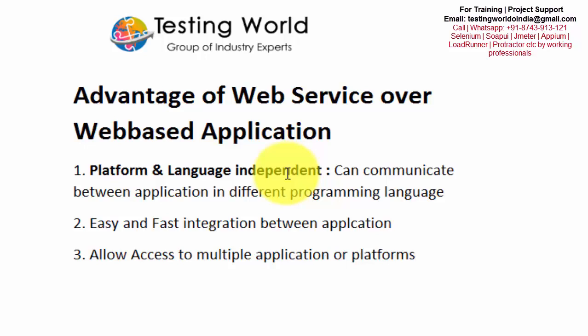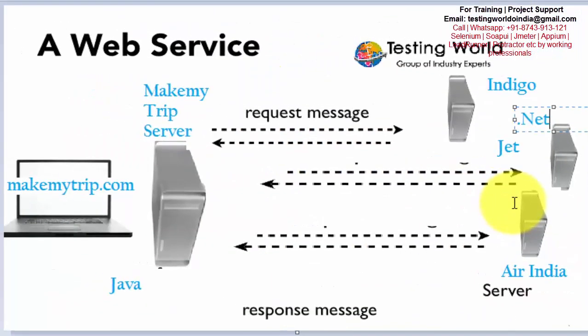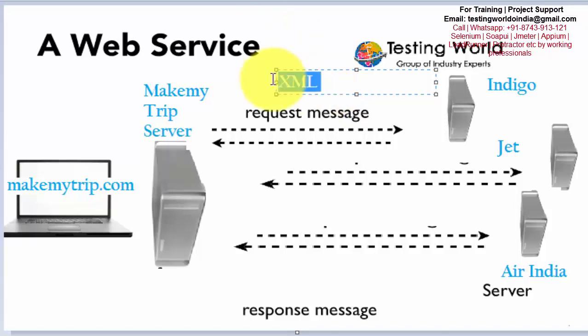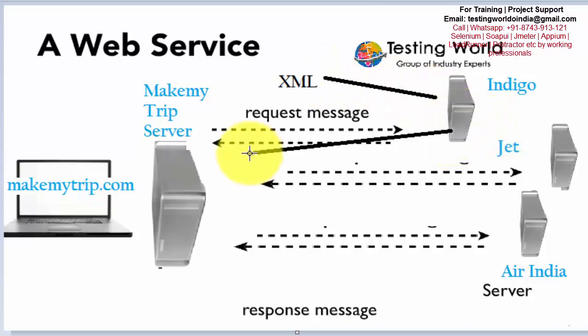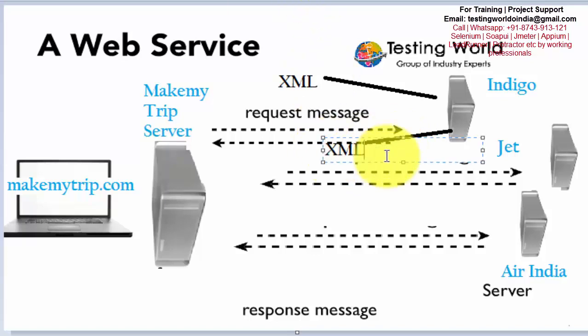The second advantage is easy and fast integration between two applications. If you try to integrate two web-based applications it will take a lot of time, and the language should be the same. But with web services, integration is easy — the first application sends a request in XML format to the web service, the web service processes it and sends output back in XML. So it's very easy integration without any direct integration needed.